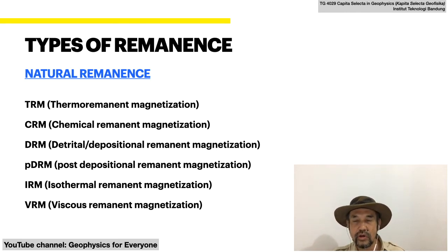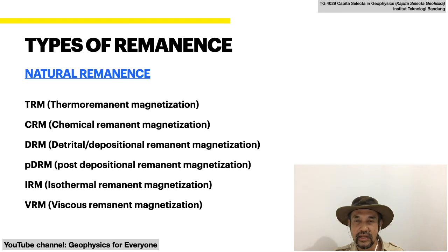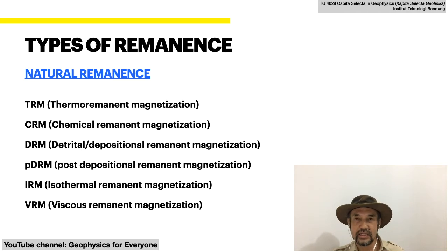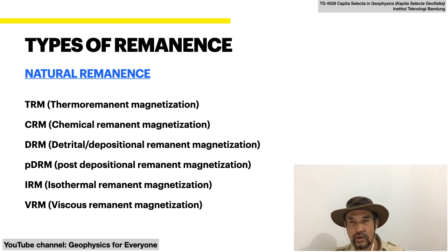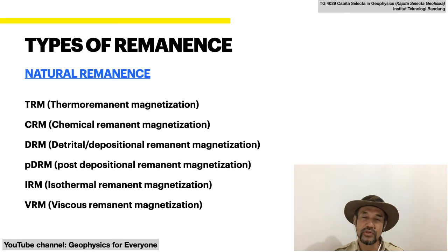Some rocks can also become magnetized because of events like lightning. Lightning is basically a very high current, and this current creates a magnetic field, although it is very short-lived. Rocks close to a lightning strike can become magnetized. This kind of remanence is called isothermal remanent magnetization, or IRM.